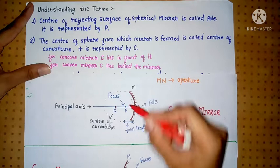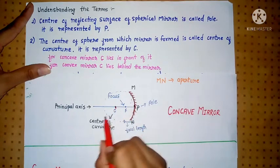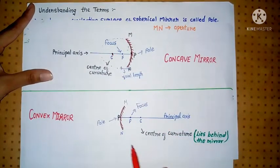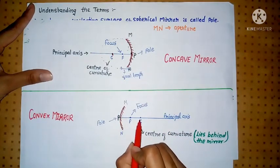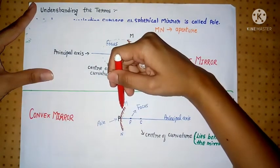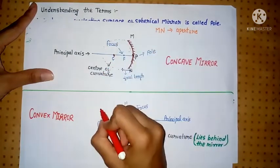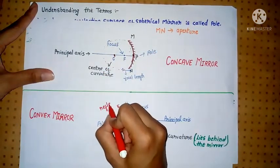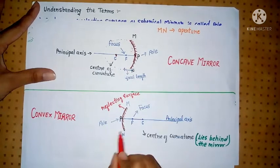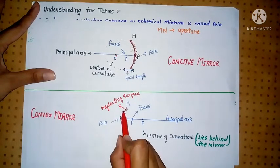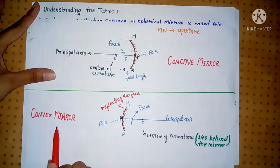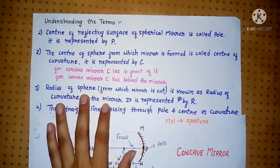For a concave mirror, the center of curvature lies in front of the reflecting surface. For a convex mirror, it lies behind the reflecting surface. The center of curvature in a convex mirror is behind the reflecting surface.